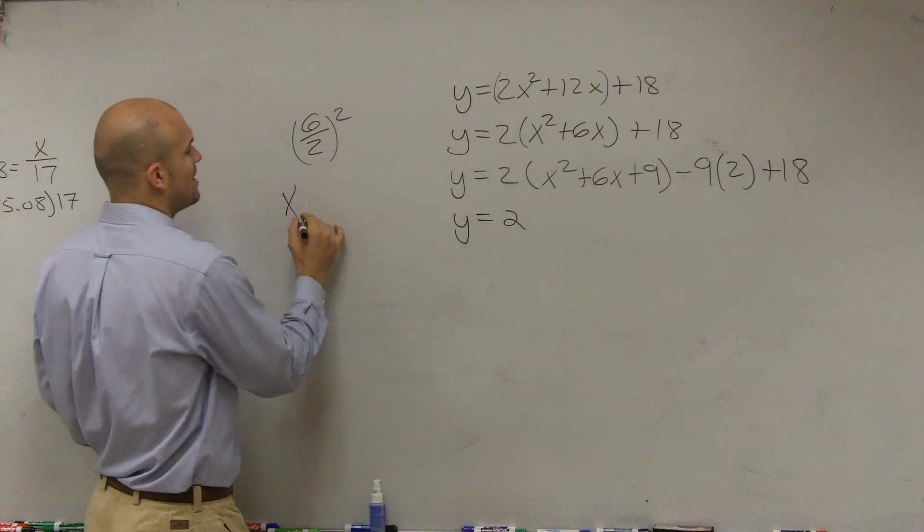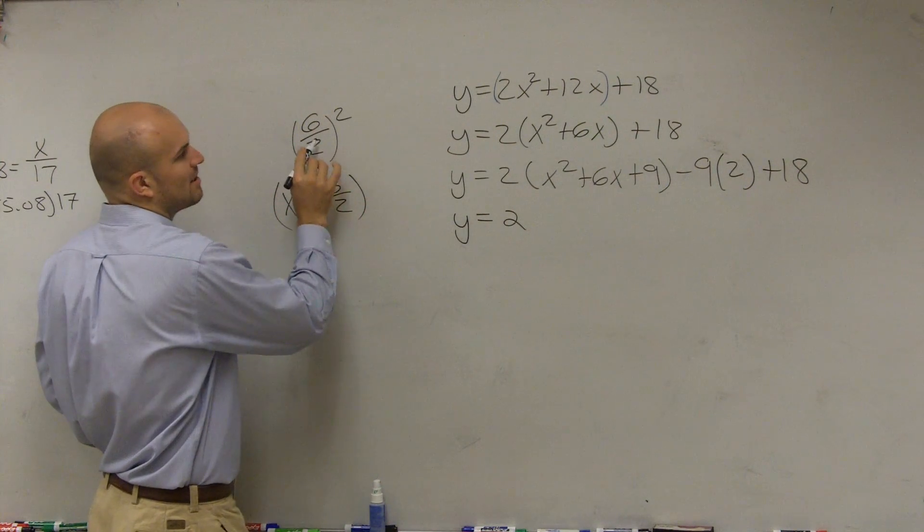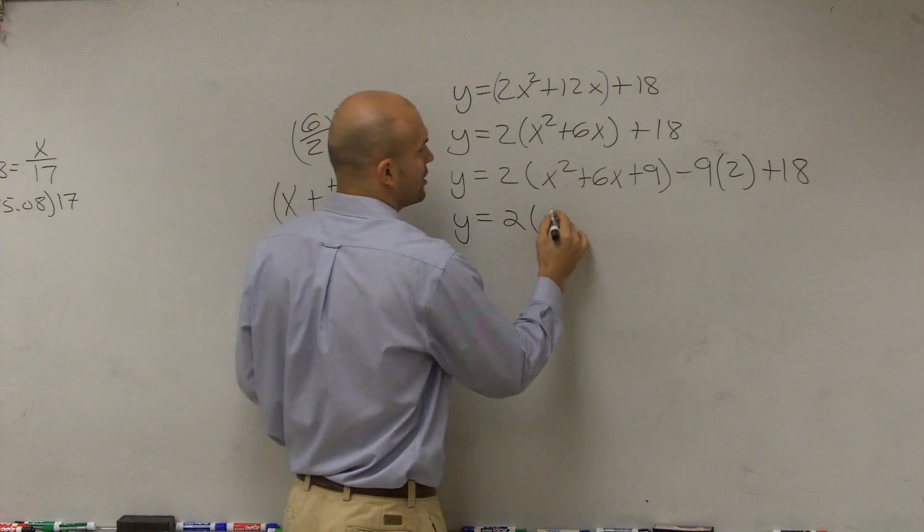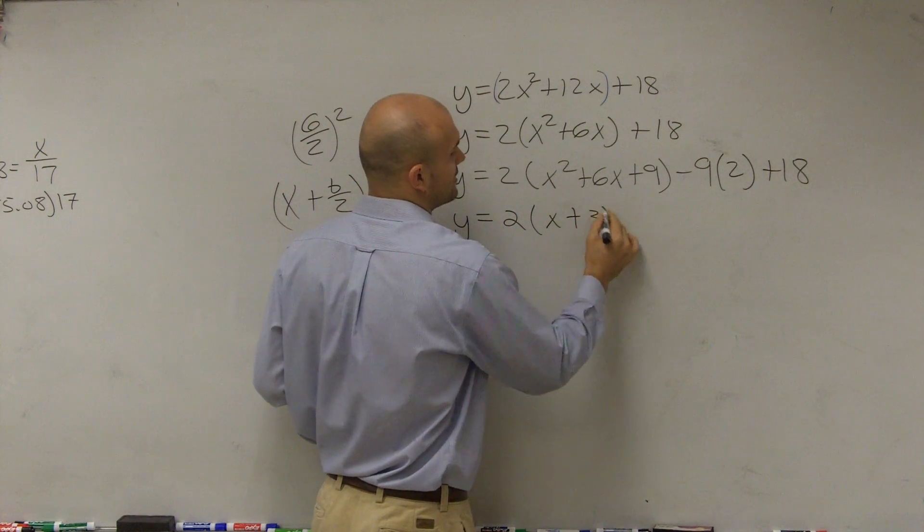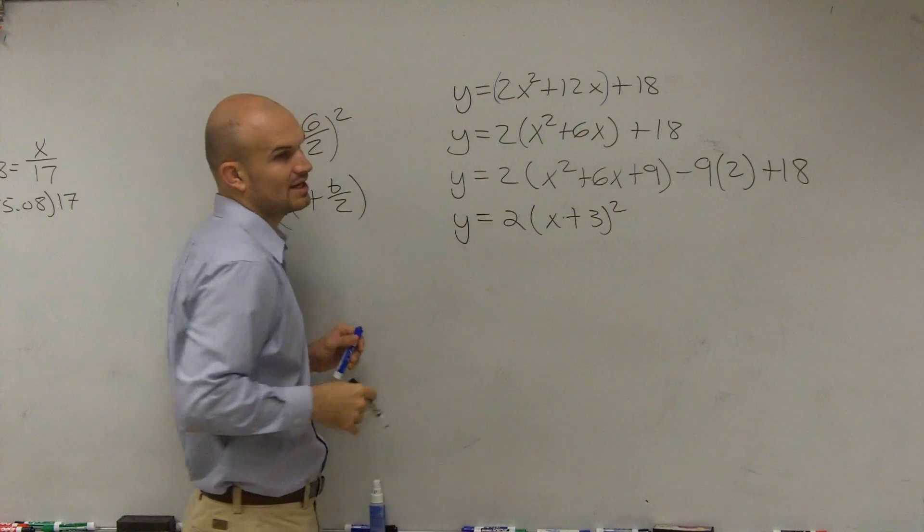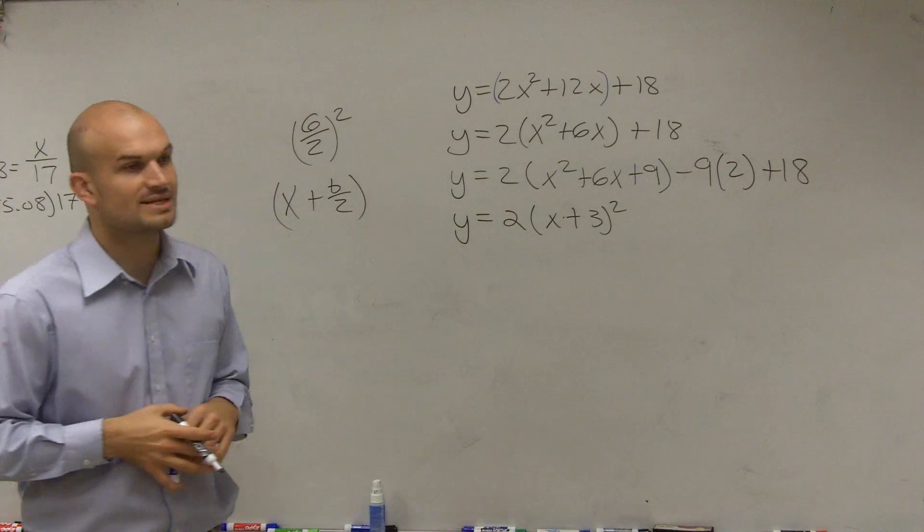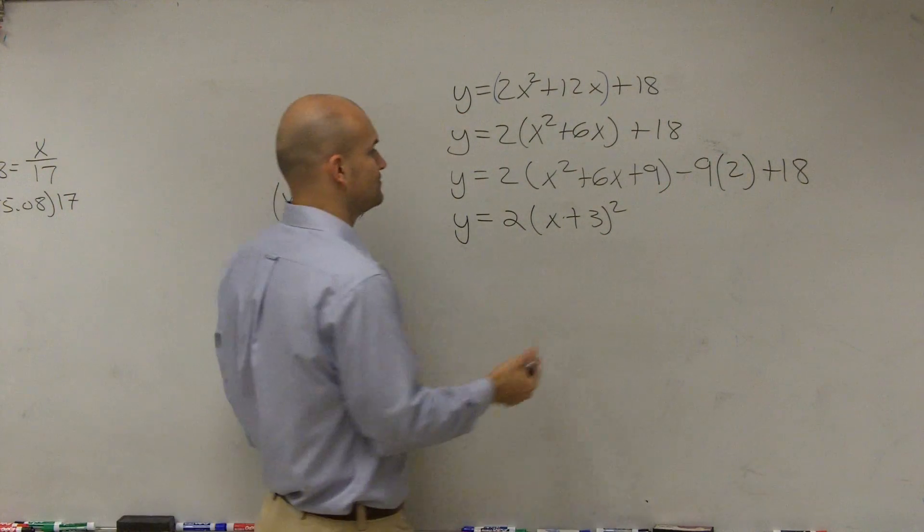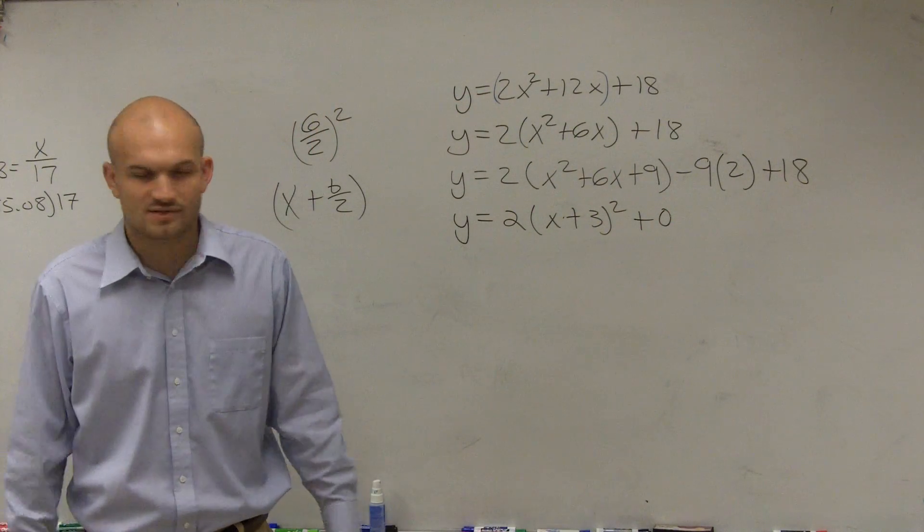Well, the one way we can always remember it is x plus b divided by 2. Well, we said b divided by 2 is 3, in which we know that x plus 3 squared is the same thing as your perfect square trinomial there. Therefore, negative 9 times 2 is negative 18, plus 18 is 0. So we can just write in the 0 just forward, so we can use it in vertex form.